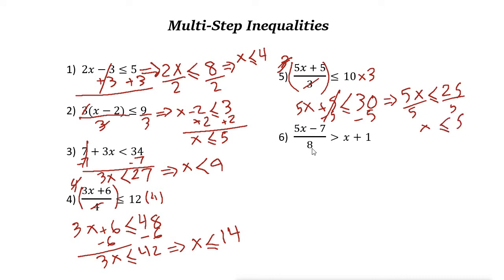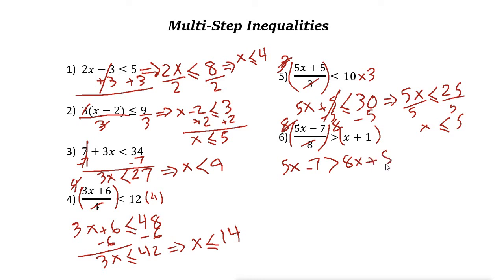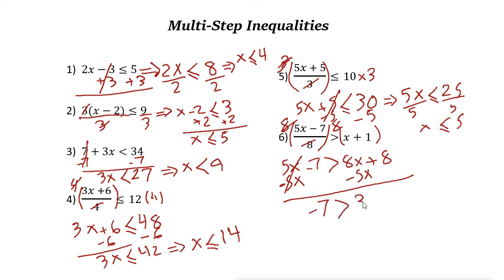Here we have variables on both sides. The first step: get rid of this 8 by multiplying both sides by 8. These two cancel out, so the left side is 5x minus 7, which is greater than 8 times the parenthesis — 8 times x is 8x, and 8 times 1 is 8. Now we have variables on both sides, so subtract the smaller variable. Subtract 5x from both sides — these two cancel out — leaving negative 7 greater than 8x minus 5x, which is just 3x.